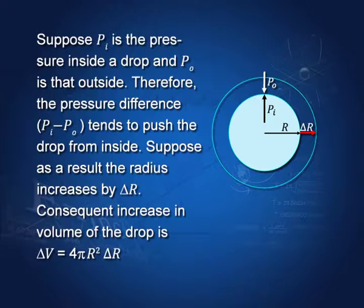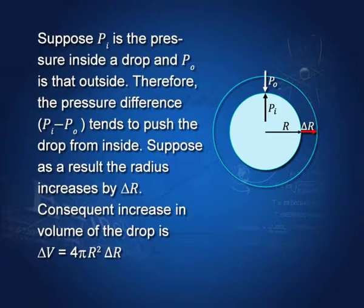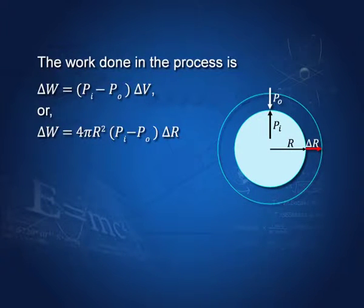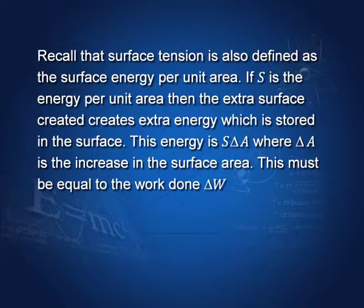Since the pressure inside is higher, it keeps pressing on its surface and tries to expand the surface. Let the expansion take place by delta r. Then the increase in volume is 4πr²·δr, and the work done in this process is (p_i − p_o) times dV, that is, the pressure difference times 4πr²·δr. Recall that surface tension is also defined as the surface energy per unit area. So if S is the energy per unit area, the extra surface created stores extra energy equal to S times δA.